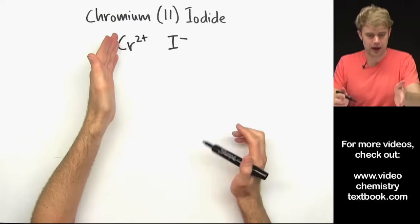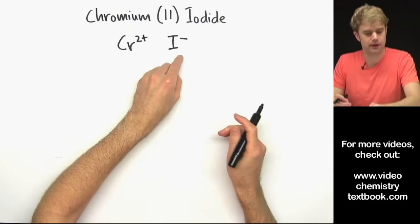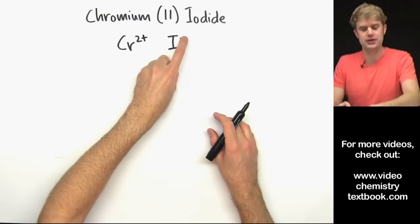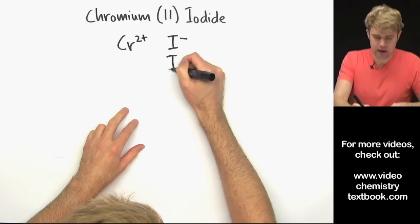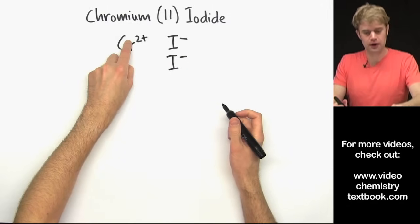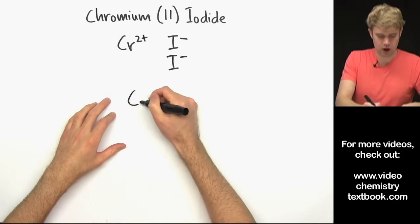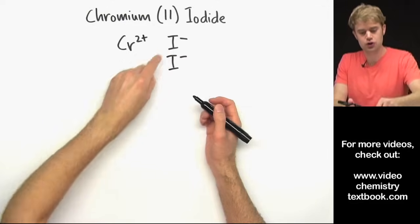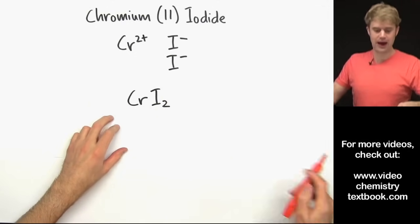So now we want to add ions of one or both of the elements so that the charges balance. Here we have 2 plus from chromium and we have 1 minus from iodide. So to get this to balance we'll add one more iodide. So now we have 2 plus here and 2 minus here. Now we write the formula. We have Cr. We have one of them so we don't write anything after that. And then we have 2 of the iodides. So I do I2 and that is the formula.